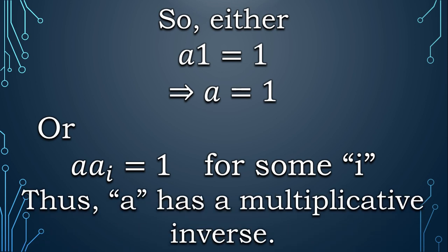So we have found the multiplicative inverse of a random element a, which means that all the elements of D have multiplicative inverses in D.